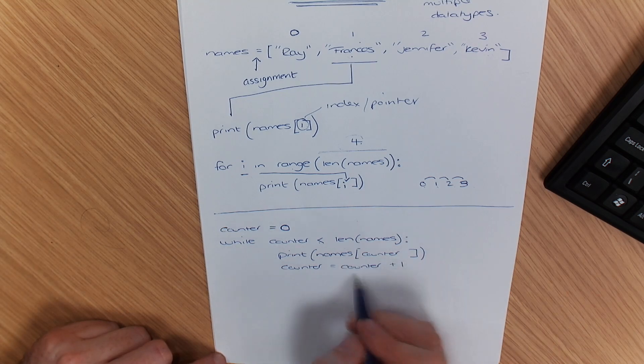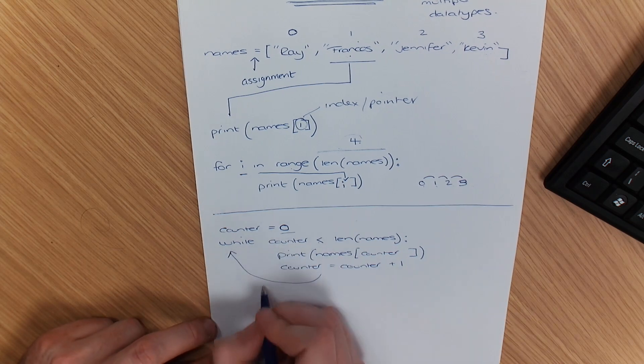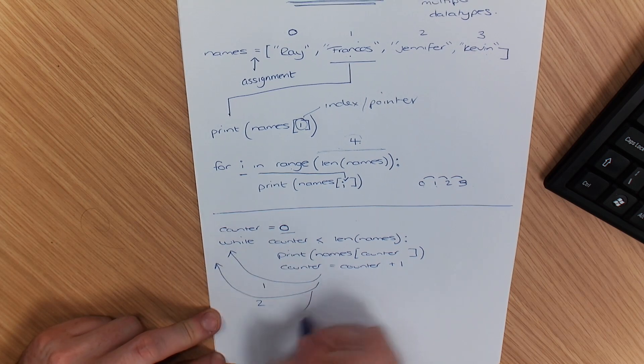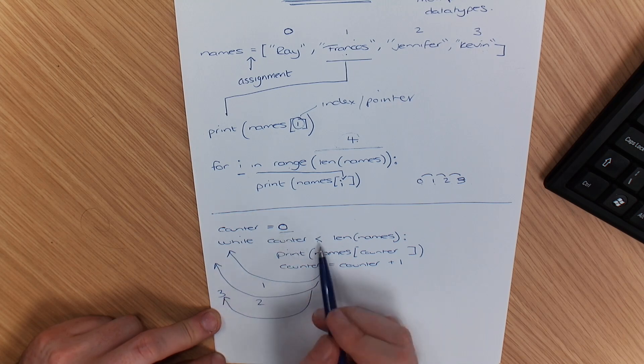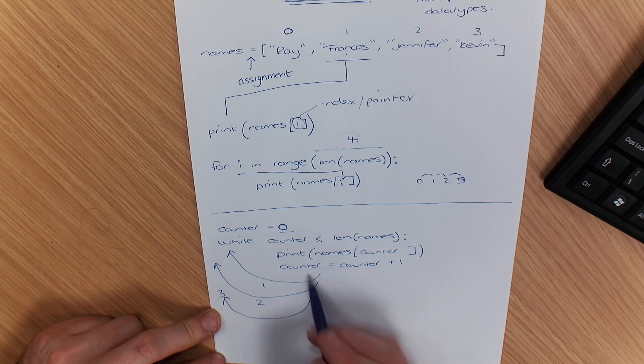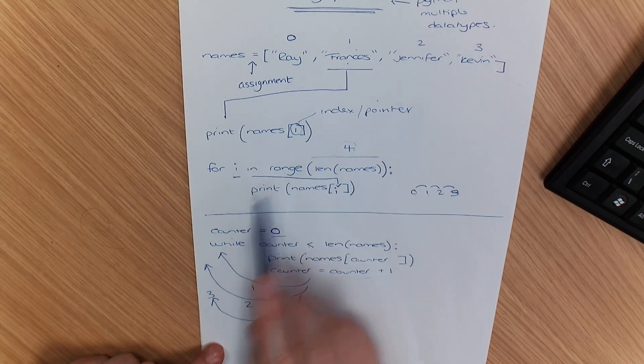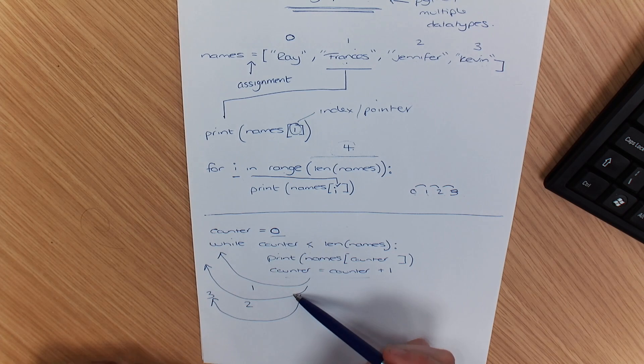That now means the first time counter is zero. The second time counter is one. The next time counter is two. Next time counter is three. It will stop because if it goes up to, if that goes up to four, that will not do that. So that's how to do a single array with a for loop and a while loop.